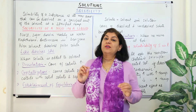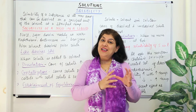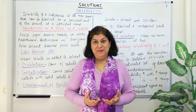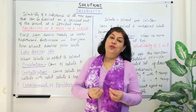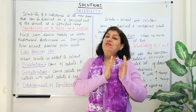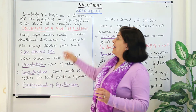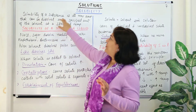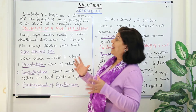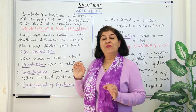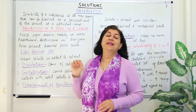Let us look at this word solubility — the ability to dissolve is known as solubility. So what is solubility? It is the ability of the solute to dissolve in the solvent, but we have to give a very precise scientific definition. The solubility of a substance is the maximum amount of that substance that can be dissolved in a specified amount of the solvent at a specified temperature.